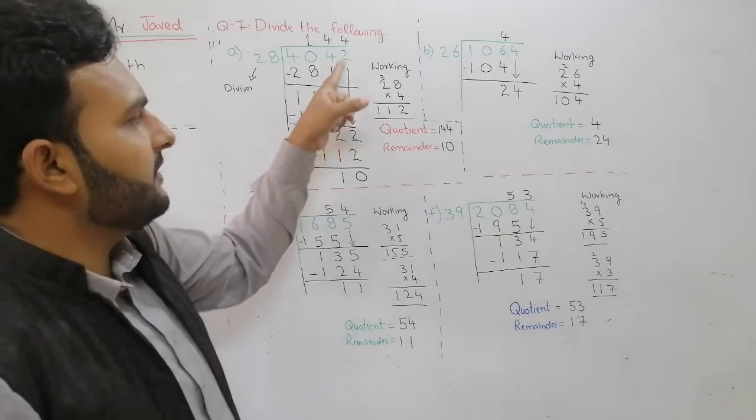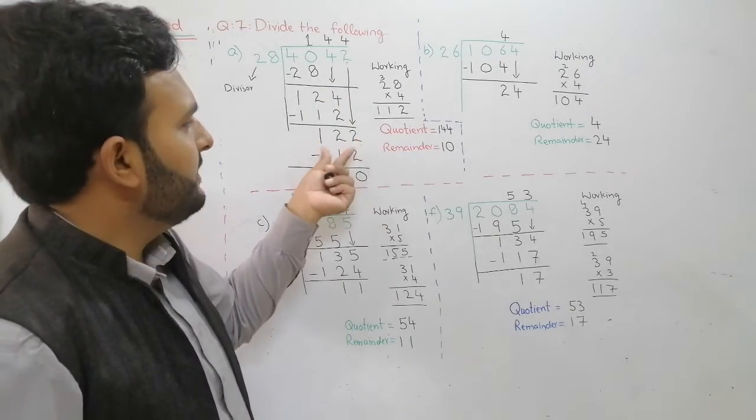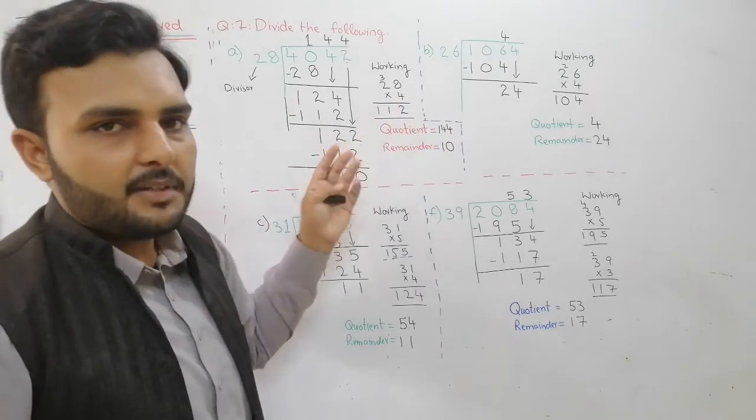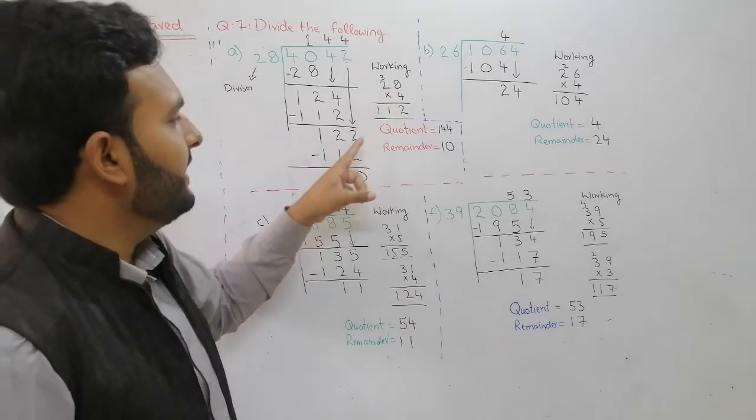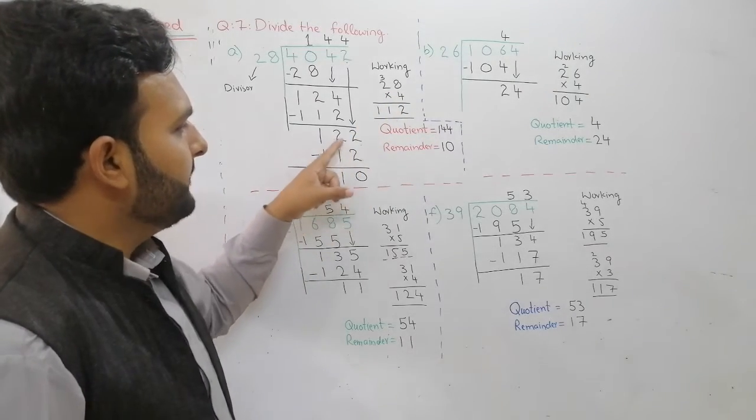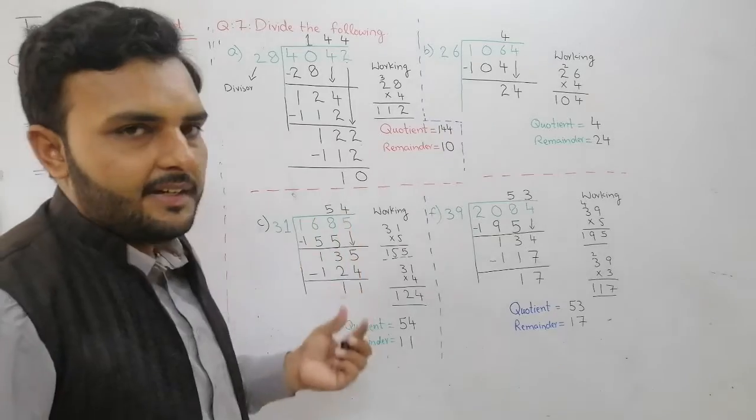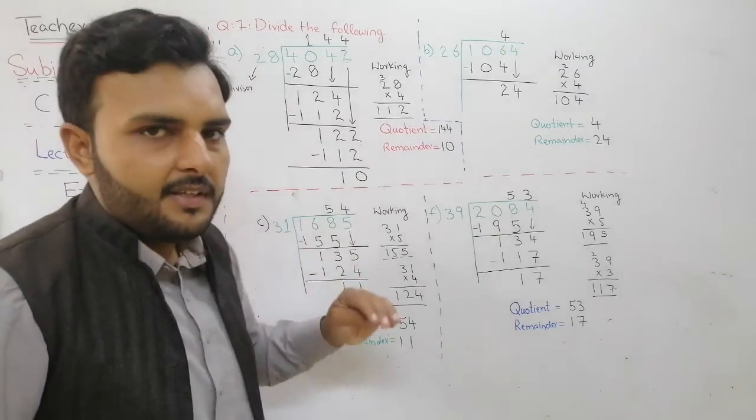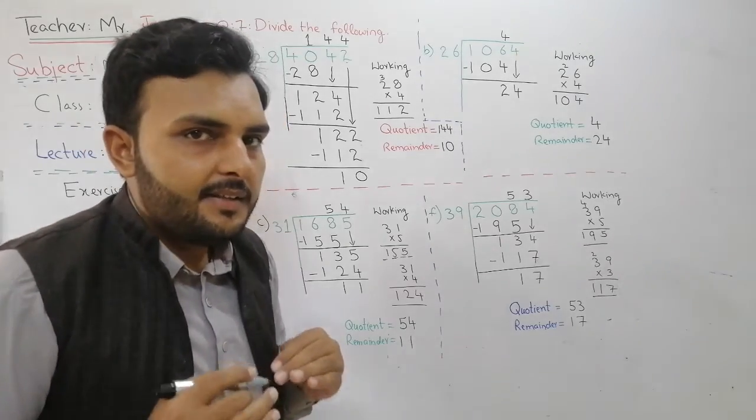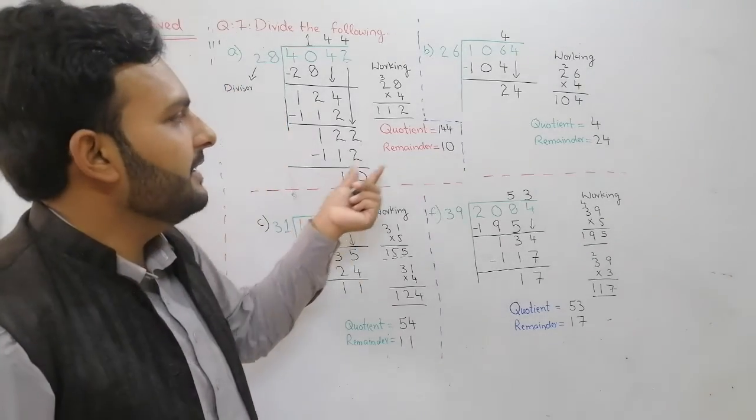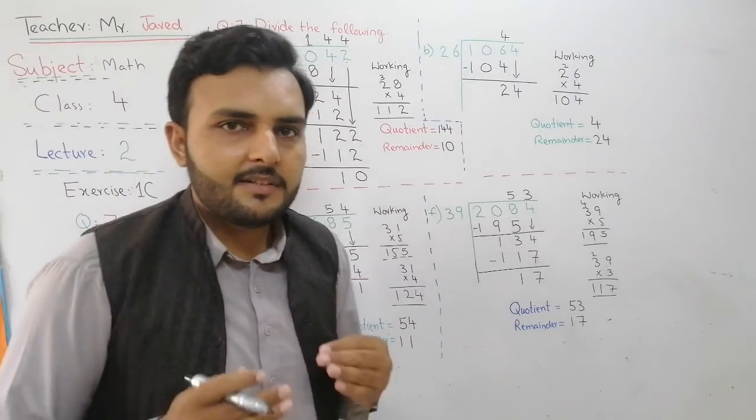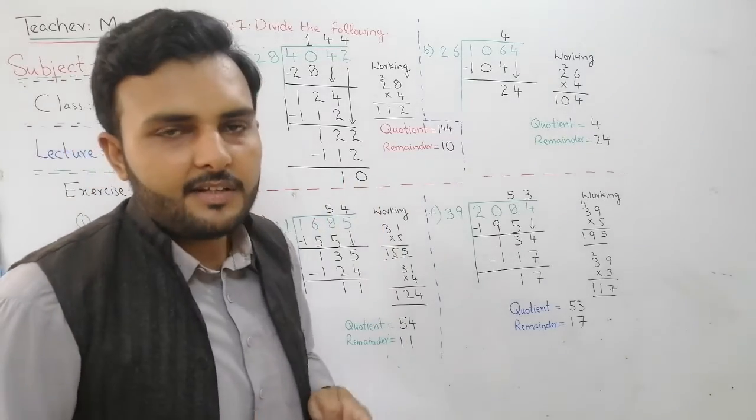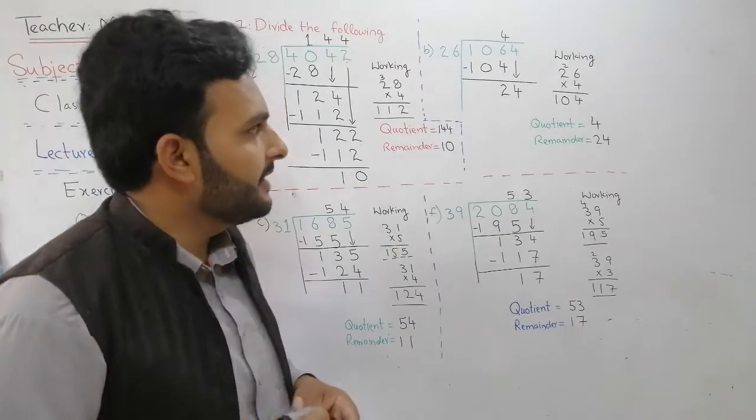4 by 2 is 2 and 2 by 1, and we will take this 2. Because 12 is small so next we have to take this, 122. So again we will write 4 and 5 will increase. So 112 will come down, so after subtraction it will be 10. Now if you see students, 10 is less than 28, so this will not be able to get further. So this will be the remainder.